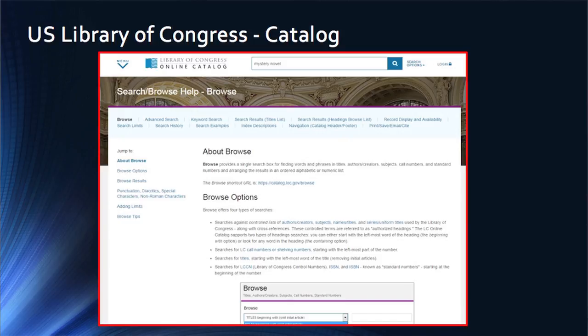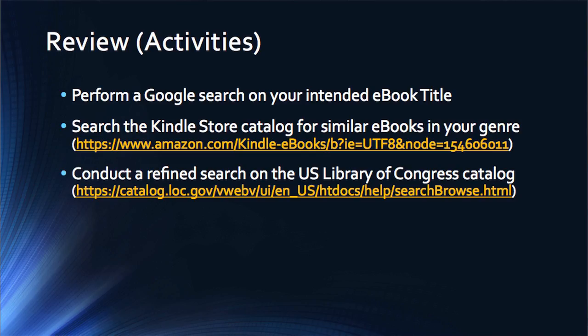Thirdly, here is a brief look at the US Library of Congress catalog. Anyone can access this catalog online and perform syntax-specific searches for the candidate title or titles you have for your ebooks. As we conclude this lecture, the review activities are: first, perform one or more Google searches on your intended ebook title; second, search the Google store catalog for similar books in your genre; and third, conduct a refined search on the US Library of Congress catalog, and if you wish, the British Library in London's online catalog for a more international focus.